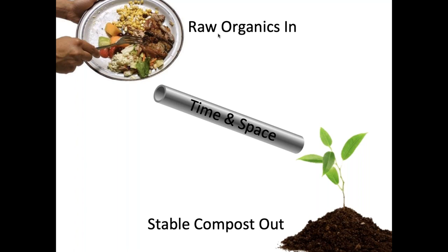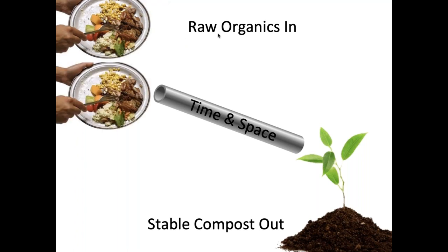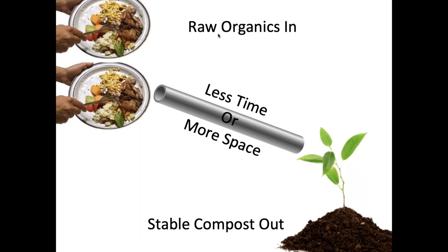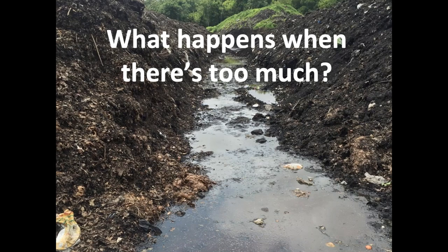You can think of a compost site or any organics recycling infrastructure as a pipe: raw organics go in, stable compost comes out. It takes a certain amount of time for material to stabilize and a certain amount of space to process it efficiently. If you add more material, you either need to compost in less time or add more space — and where that space is unfortunately often added is on top of the other compost, which gets very inefficient.